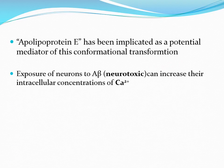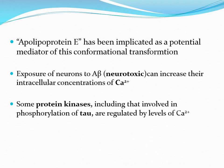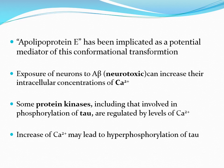Amyloid beta or amyloid beta-containing fragments are directly or indirectly neurotoxic. Exposure of neurons to amyloid beta, which is neurotoxic, can increase their intracellular concentration of calcium ions. Some protein kinases, including those involved in the phosphorylation of tau protein, are regulated by the level of calcium ions. An increase of calcium ions may lead to hyperphosphorylation of tau protein.